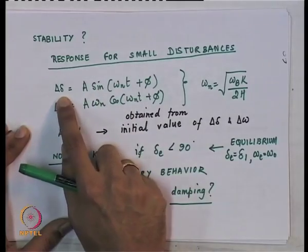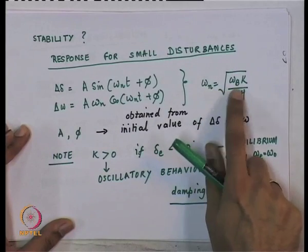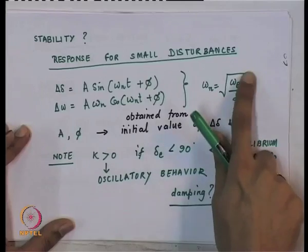Whether a system is going to be stable after a disturbance — whether it is going to come back to the equilibrium — is determined by the response of the system. The response of this particular system was written by analogy with the spring-mass system; we did not actually derive it. We will do that for general linear systems in the following lectures. The response for small disturbances is given by omega_n, which depends on k and H, the natural frequency of oscillation in delta and omega.